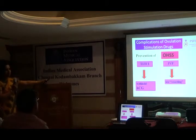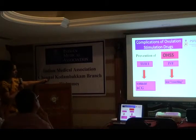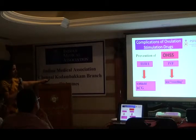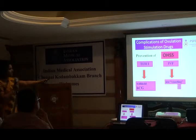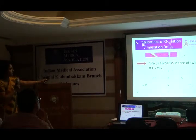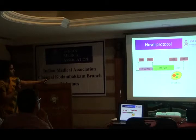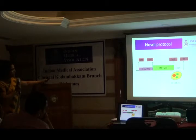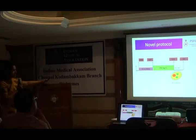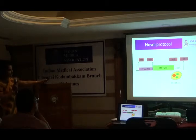Generally, when there are lots of follicles and we expect OHSS, what we do is prevent ovulation by using a coasting technique and withdraw the hormones for a few days, or we withhold the ovulation trigger drug — that is HCG. Nowadays, we have come to a novel protocol which will actually benefit many people, where you initially give HMG and then add clomiphene citrate, get only 2 or 3 dominant follicles, and have a single healthy pregnancy.